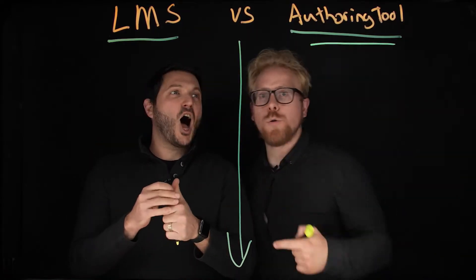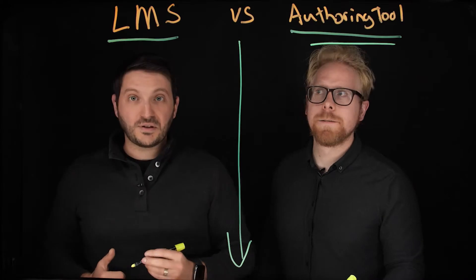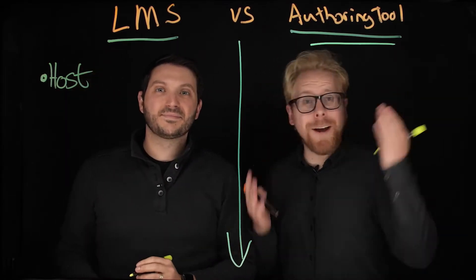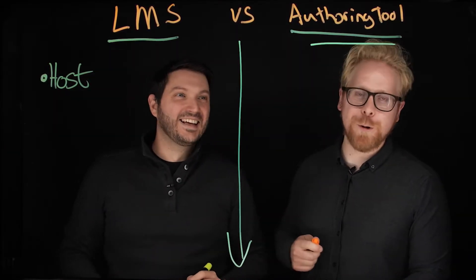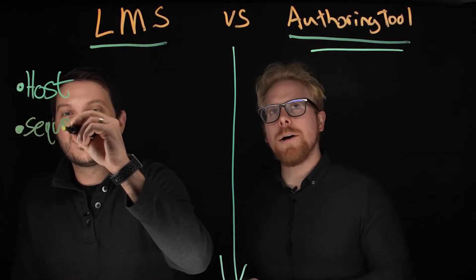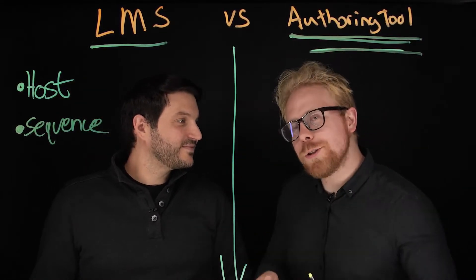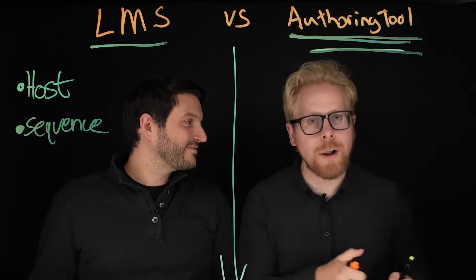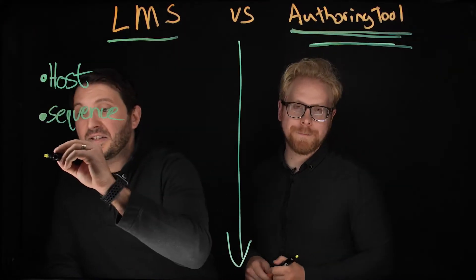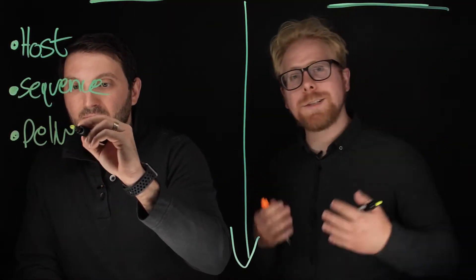LMS — what does it do? So there are four main things that an LMS does. The first thing is it allows you to host your e-learning program. An authoring tool doesn't allow you to host any e-learning program. The second thing that an LMS allows you to do is sequence your course, so you can build out those modules with an authoring tool, and then put them in your LMS in chronological order, so your learner has to go through your program step-by-step. Number three is it delivers — you deliver it to your learners, the people taking your course. An authoring tool doesn't deliver it; it creates it, it doesn't deliver.